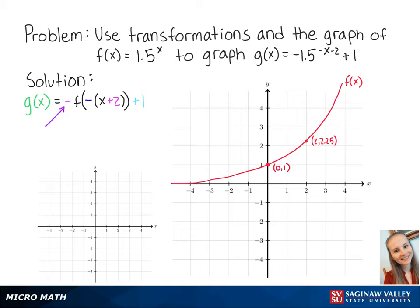The negative function means that we will reflect the graph over the x-axis. So our new points are at (0, -1) and (2, -2.25). Connecting these points, we get the graph of negative f of x.